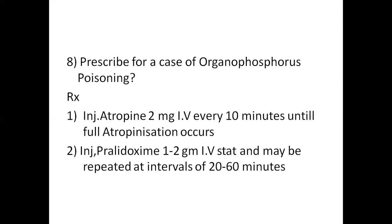Eighth question: Prescribe drugs for a case of organophosphorus poisoning. Treatment: Injection Atropine 2 mg IV every 10 minutes until full atropinization occurs. Injection Pralidoxime 1 to 2 grams IV stat, and may be repeated at intervals of 20 to 60 minutes.